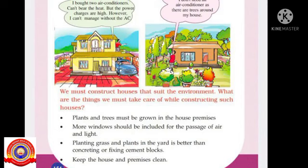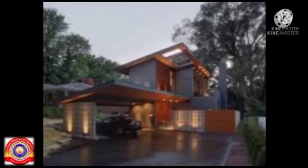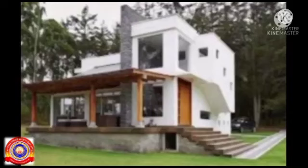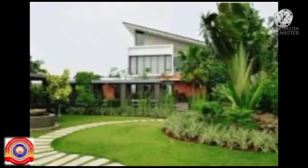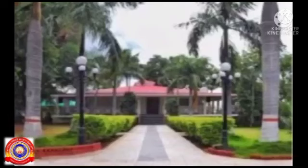Today we have to discuss about the things we must take care of while constructing a house. The most important point is we must construct the house to suit the environment. Next, plants and trees must be grown in the house premises.